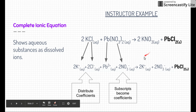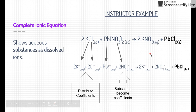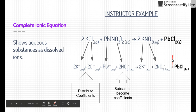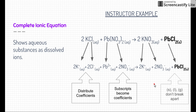For two potassium nitrate, we distribute the coefficients again to potassium and nitrate — nothing new there. Now look at lead two chloride: it does not change. That's because solids (precipitates), liquids like water, and gases do not break apart in a complete ionic equation. Those things stay as they are, and that will become important when we talk about net ionic equations.